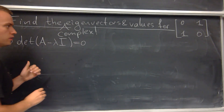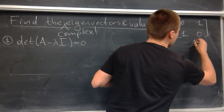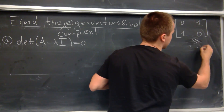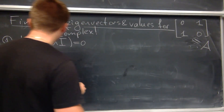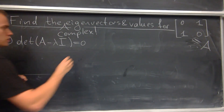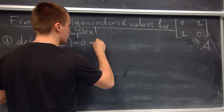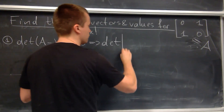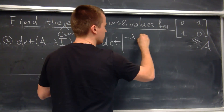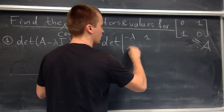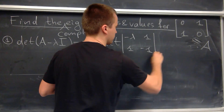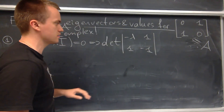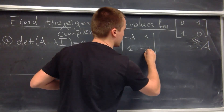Our matrix A equals this matrix. So from here I need to find the determinant for which lambda equals zero — that is, for the matrix A minus lambda I, giving us entries: minus lambda, minus 1, 1, minus lambda.